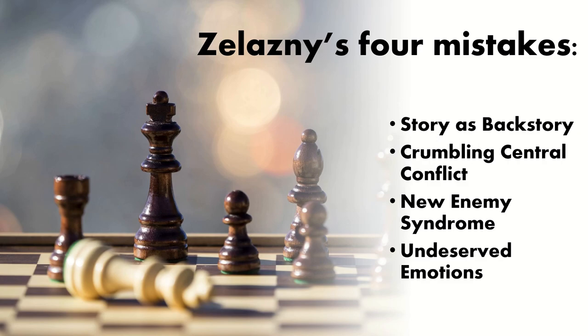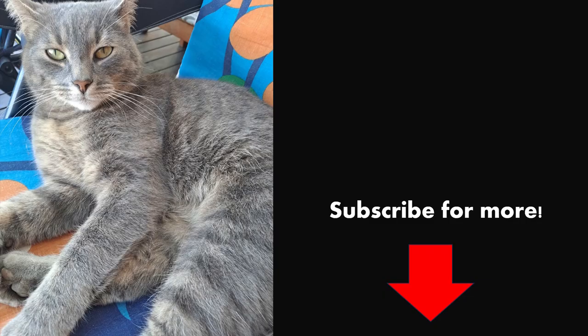To sum up the mistakes: Lord of Light has too much backstory and the beginning chapter promises something other than what is delivered. The central conflict crumbles and is replaced by a new enemy, relying on New Enemy Syndrome. The ending does not match the genre, causing undeserved emotions. That's all folks — Writing Cat wishes you good luck with your own plotting. Remember to subscribe if you enjoyed this and want to see more writing advice and world-building content. Follow on Twitter to stay up to date. Until next time.